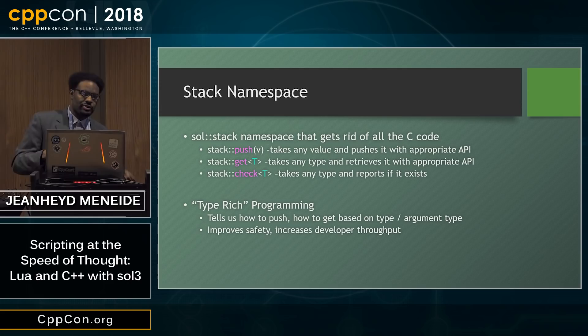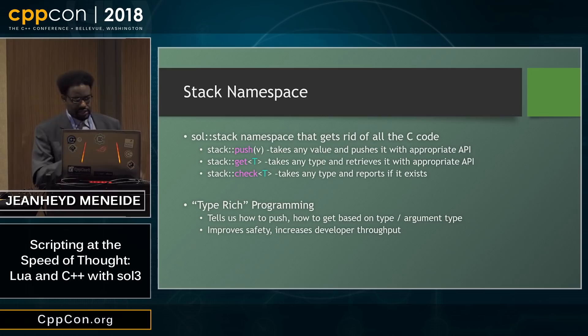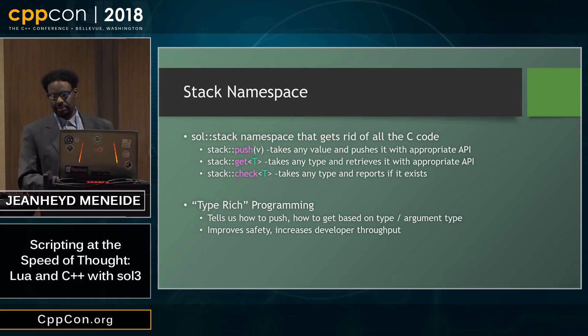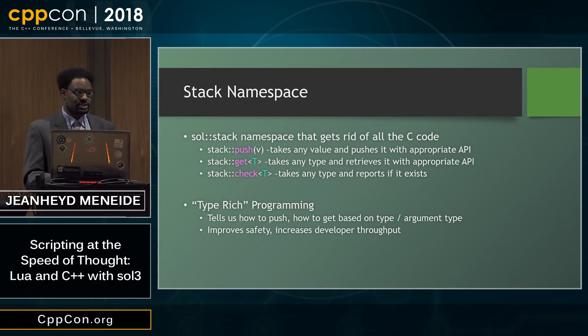The reason this is useful is because we can use overloading and we don't have to tax the programmer to figure out which of these complicated functions to use to pull things out or push things onto the stack. You just call stack::push with the value you want and it will put it into the stack and call whatever API is appropriate. You call stack::get and we'll use whatever API is appropriate for pulling out the thing you asked for. If you ask for std::string, we'll use lua_tostring. If you ask for an int, we'll use lua_tointeger. If you ask for a user type or class type, we'll use lua_touserdata with some extra handling. This is type-rich programming - an idea that Bjarne taught in his class at Columbia, that the types tell you what to do.